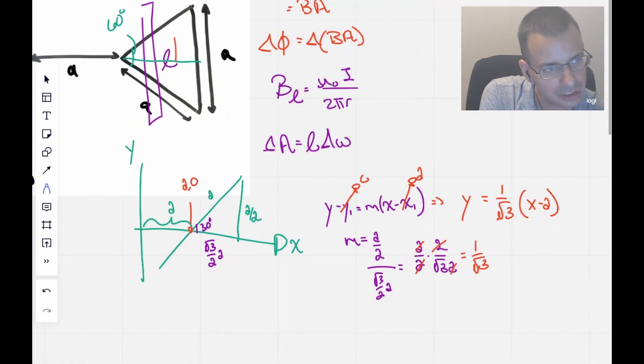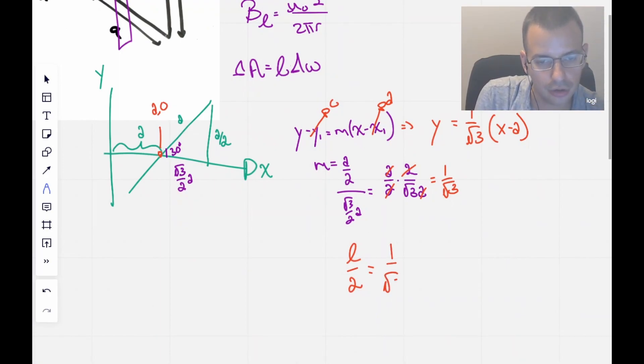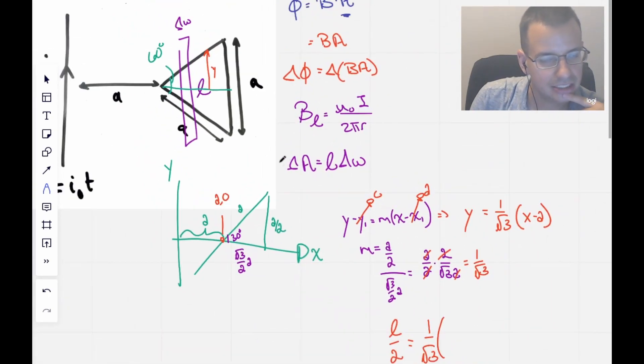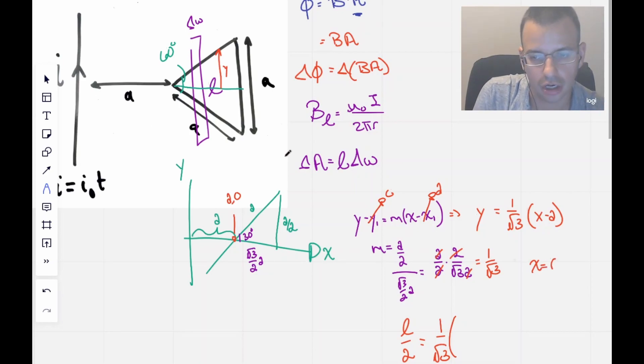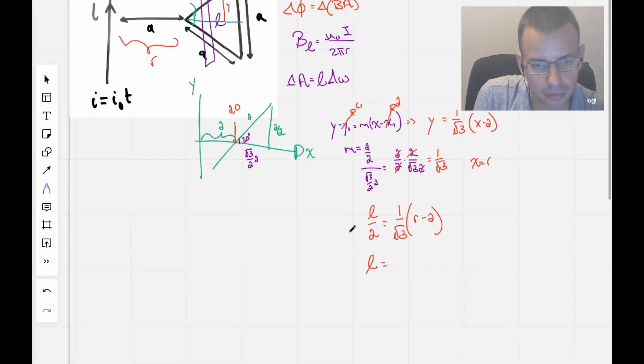The length of this part of the triangle, or this rectangle, is going to be l over 2, because I'm only looking at the top half of the triangle. I'm going to double it up. That's going to equal 1 over square root of 3. Instead of using x, I'm going to say that x equals r, where r is just the radius from our current carrying wire. So this is going to be 1 over square root of 3, r minus a, where a is just a constant. So l equals 2 over square root of 3, r minus a.